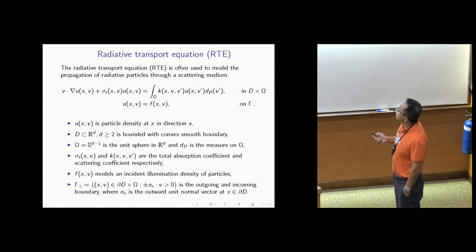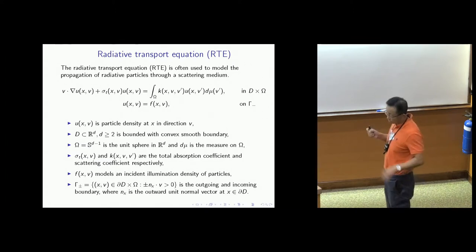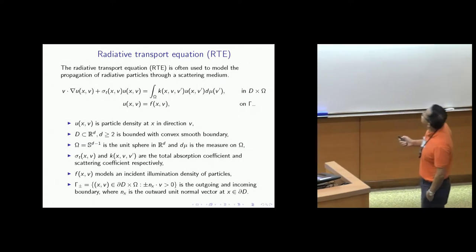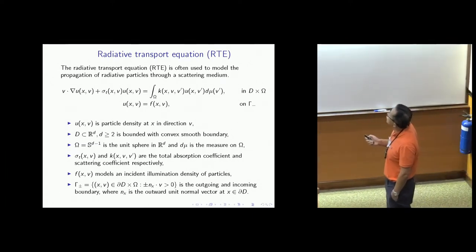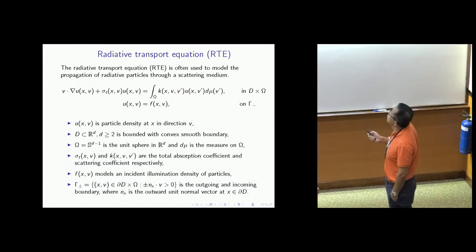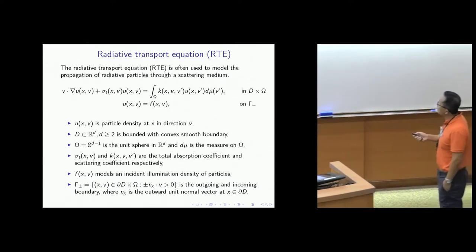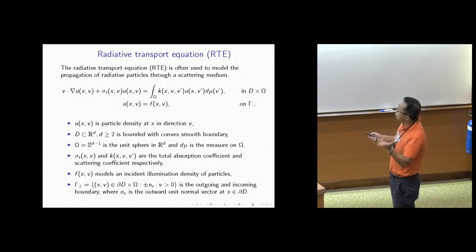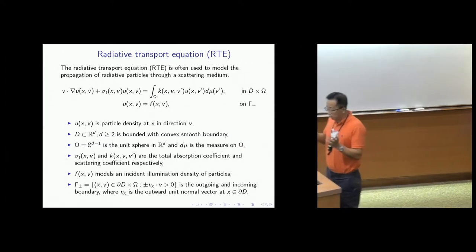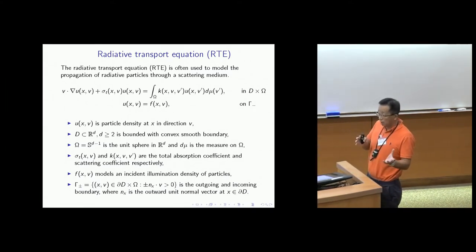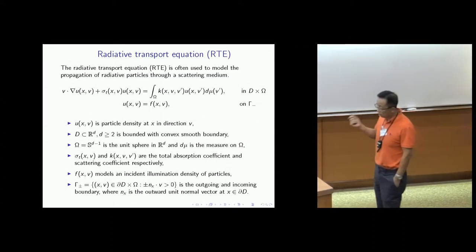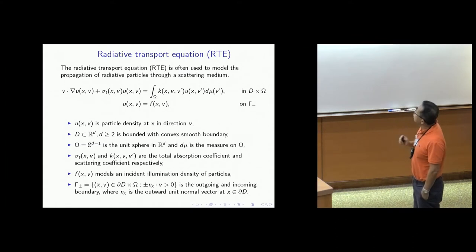This U is the particle density at position X in direction V. Your particle goes in all directions, and this is the density at this point going in this direction. It is transported along this direction, and absorbed and scattered. This is the source, which tells you how many photons are incoming from part of the boundary, where the boundary is a physical boundary crossed with a unit sphere. The half-boundary consists of directions with an acute angle with the inward normal — that's incoming — and an acute angle with the outward normal is the outgoing boundary.